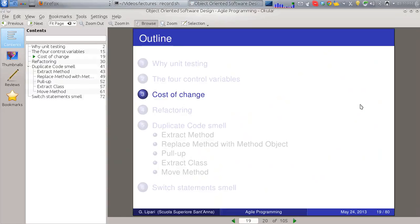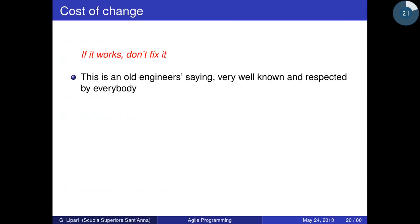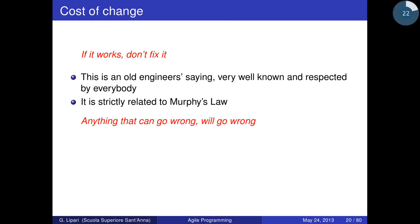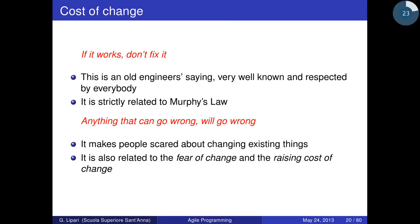Let's continue the lecture. Today we are going to discuss the cost of changes. One of the most popular sayings among engineers is 'if it works, don't fix it.' We also have Murphy's Law: anything that can go wrong will go wrong. So if we know something is already working, don't touch it. These two combined make people scared about changing existing things, and this is related to the fear of change and the rising cost of change.